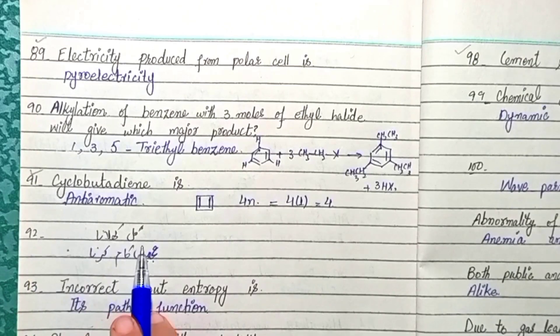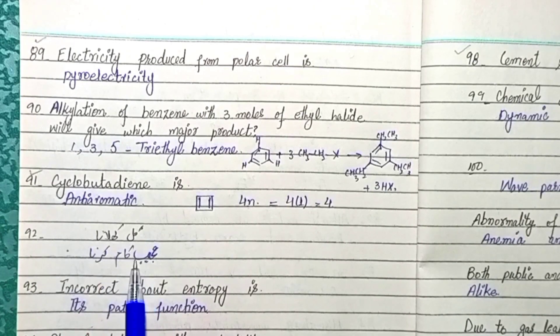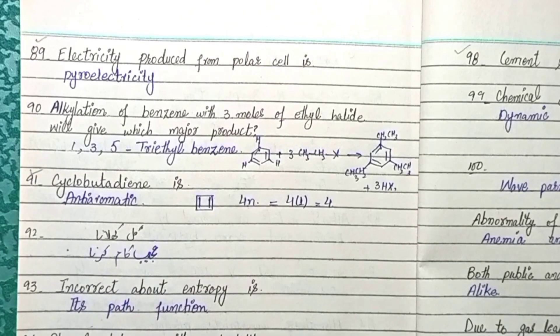Question 92 (Urdu literature): 'Gul khilana' is an idiom meaning 'to do something strange or absurd.'